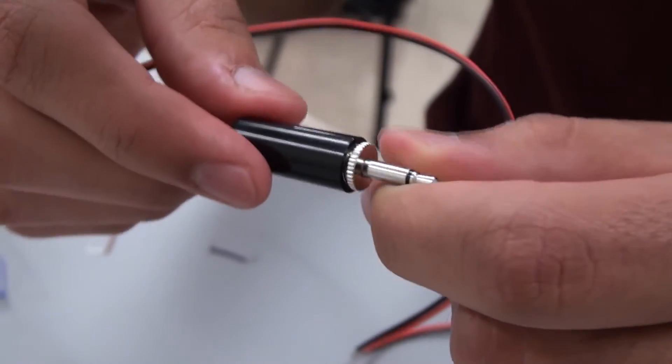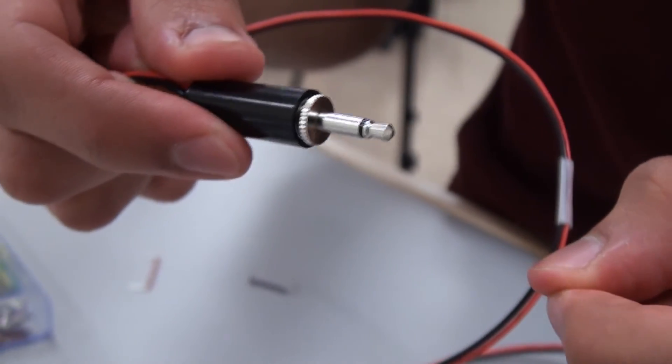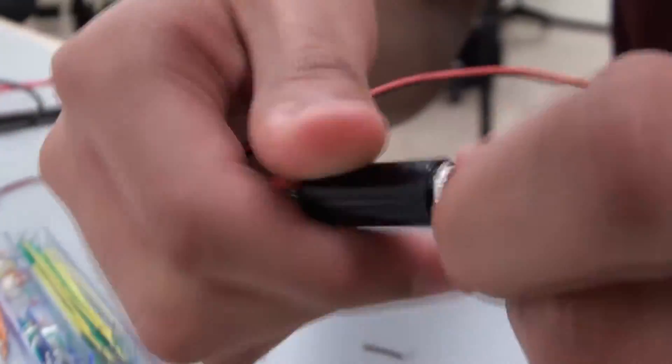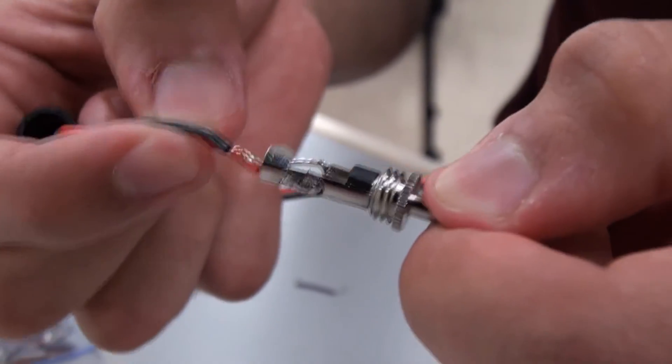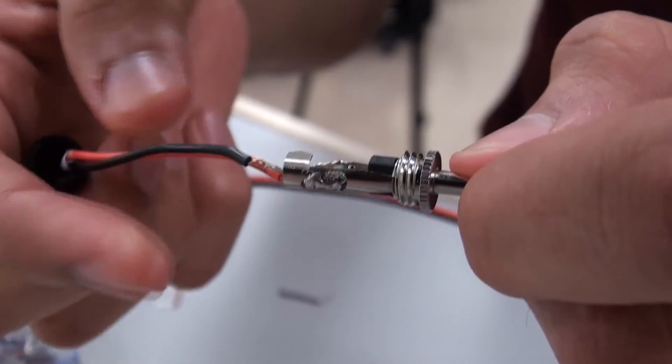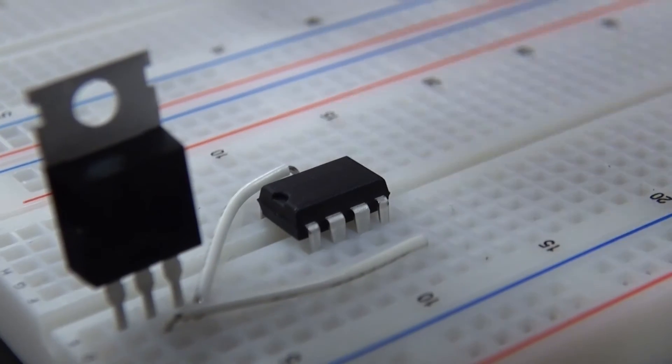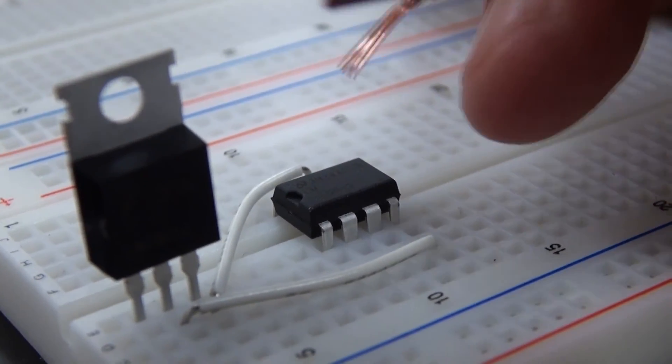This is the mono audio jack we'll be using to provide signals to the amp. We pretty much already soldered the red for positive, black for negative, as you can see. So now we're going to connect the audio jack to the IC chip.